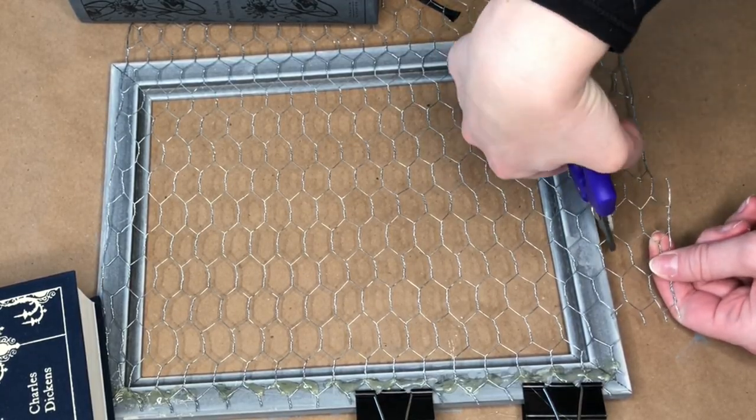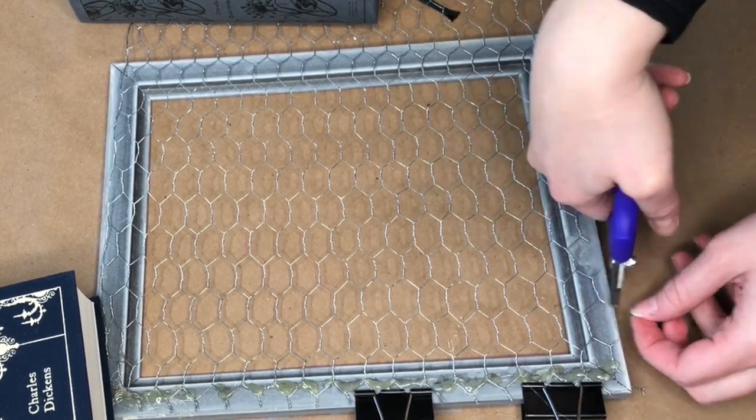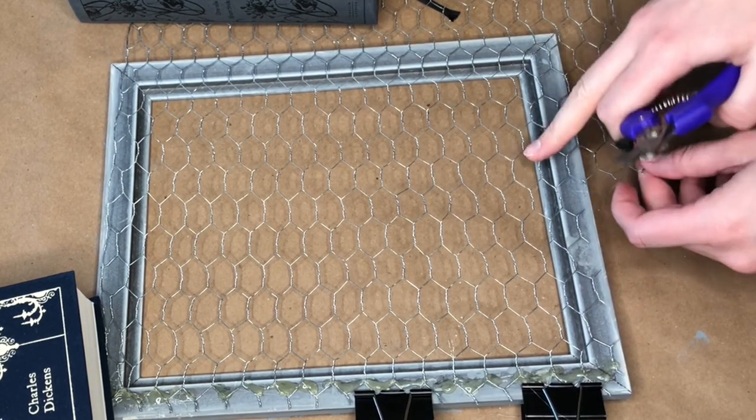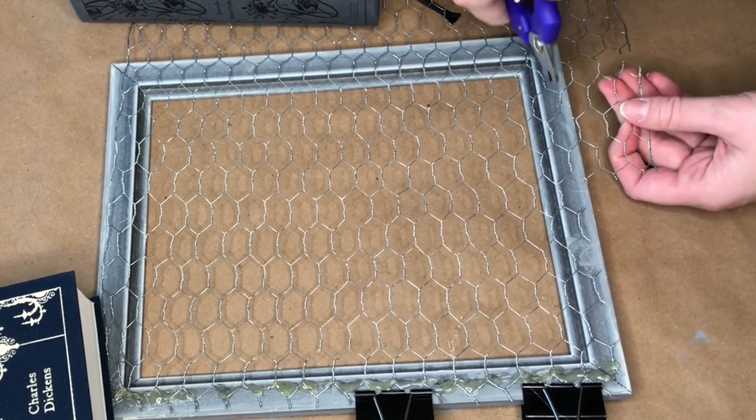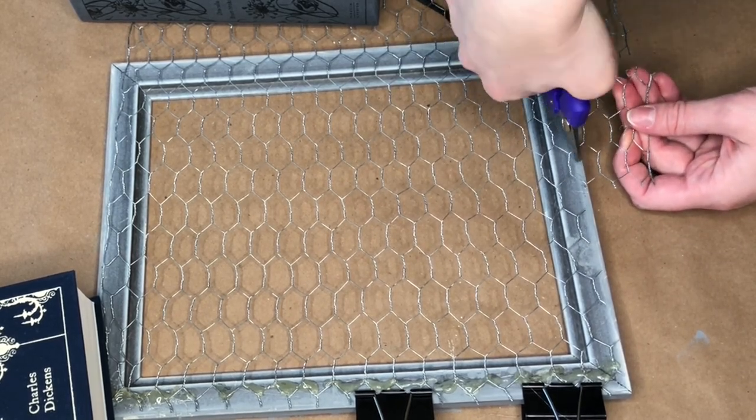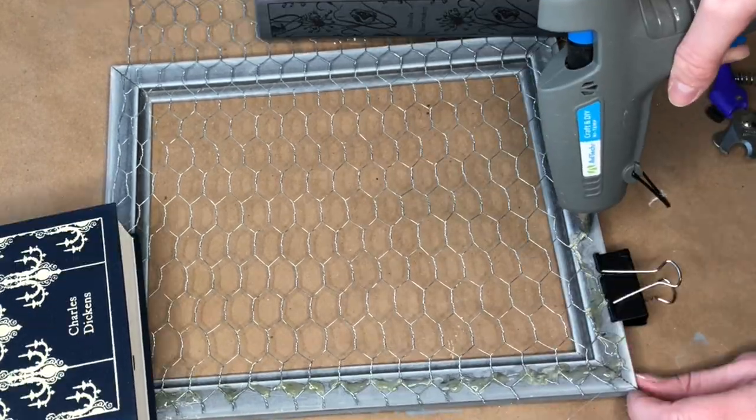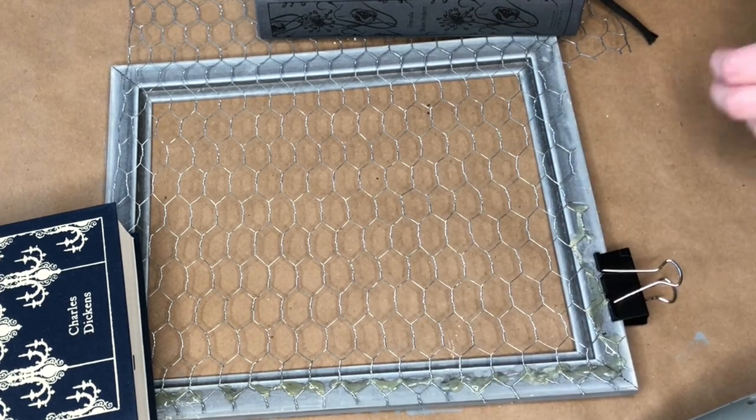To cut the chicken wire, this is a little tip I got from my friend Sammy at Unicorn Dust Designs. And she recommended these nail trimmers for dogs that are found at the Dollar Tree. And they work amazing. They cut through everything with dowels, chicken wire. This is just a really great one dollar tool to have. And now you're just going to continue putting down the binder clips and hot gluing the chicken wire down to the frame.